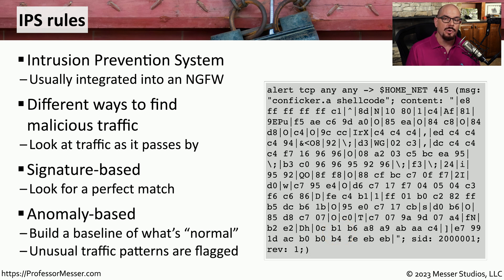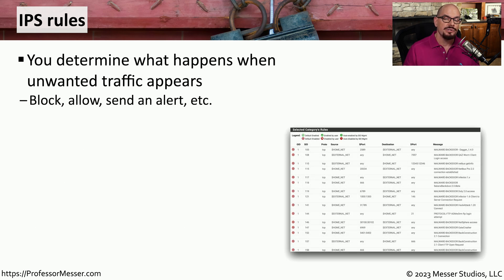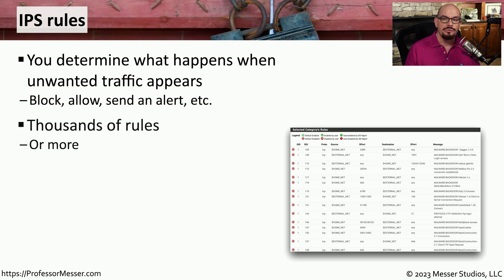Some intrusion prevention systems can also work without specific signatures by looking for anomalies. The IPS may be configured to recognize what a generic intrusion might look like, such as a database injection. If any type of database injection passes through the IPS, it will be blocked even if a specific signature doesn't exist. The IPS rule base is very similar to the firewall rule base — there's a list of vulnerabilities, and you decide whether the IPS should allow or block them. Most intrusion prevention systems have thousands of signatures, and you can decide which are allowed through your network and which are blocked.